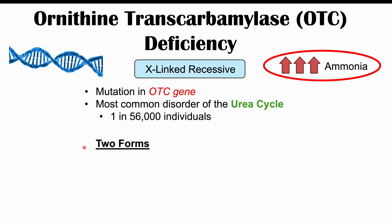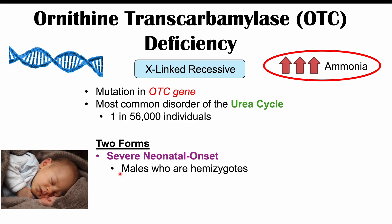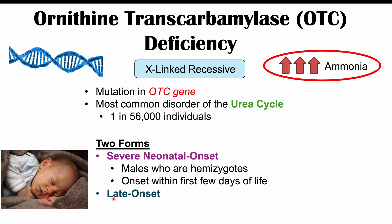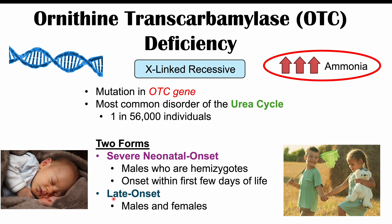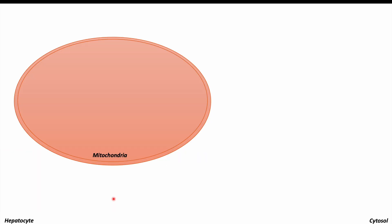There are two forms of OTC deficiency. There's a severe neonatal onset form, which mostly affects male patients who are hemizygotes — those with just one affected X chromosome — with onset of symptoms within the first few days of life. The second form is a late onset form that can occur later in childhood and can affect both males and females.